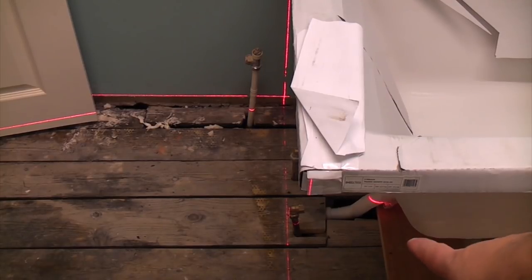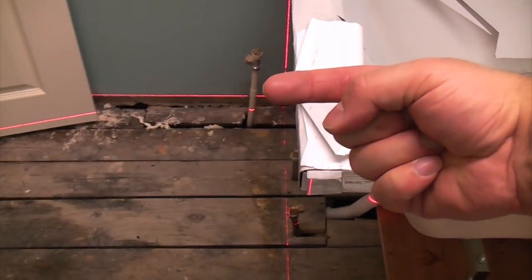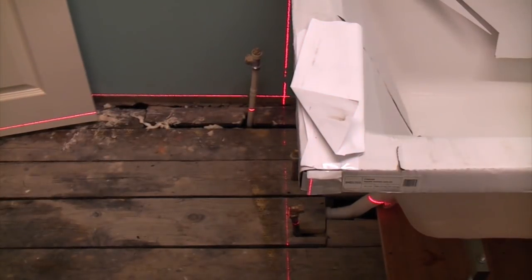There's actually a joist down there that is stopping us from moving the pipes forward. So we're going to move the bath that way by 20mm, and we're going to do that by packing out the other end.